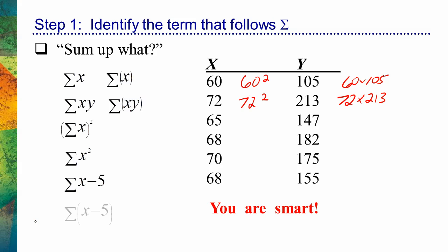Now look and see how that differs from something very similar: the sum of the quantity x minus 5. You can see that this quantity is in parentheses, so this is all being held together and it's right next to the sigma sign. So sum up what? What am I being asked to sum up? x minus 5. So what I would actually need to do is subtract 5 from every single x value. So 60 minus 5 would be 55, 72 minus 5 would be 67, and so forth. And once I find all those values, I sum them up.